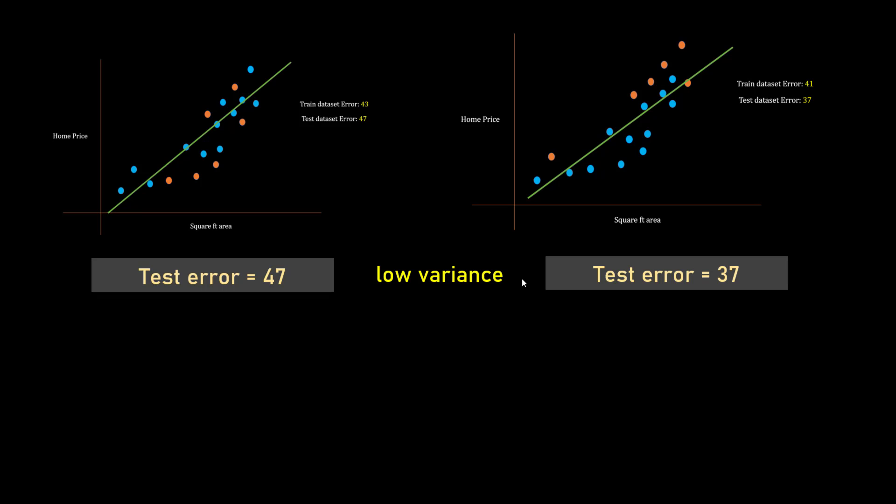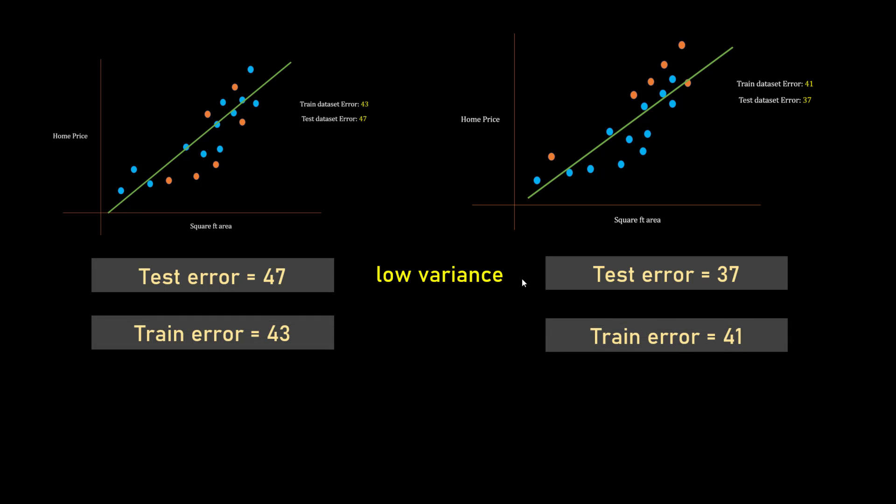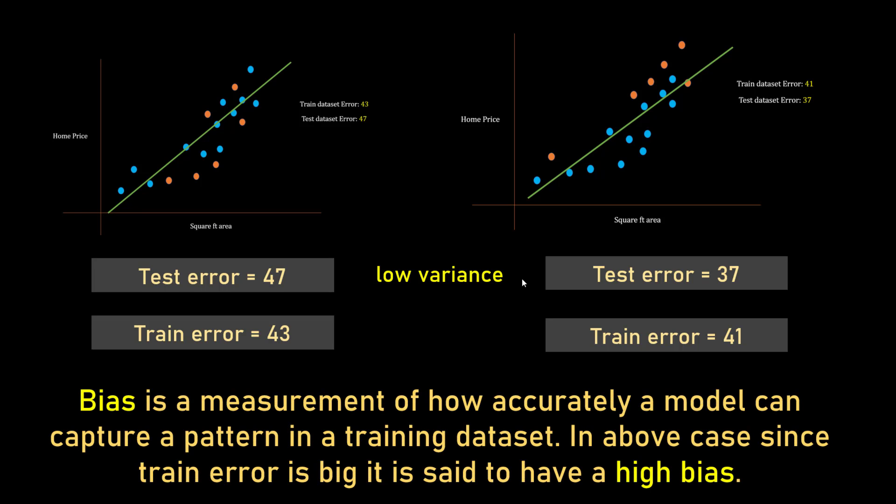This is called low variance because based on what data point you select as your training samples, your test error doesn't vary that much. 47, 37 - they're still similar, it's not like 100 and 27. Your test error doesn't vary too much, hence low variance. But if you look at your train error, in the previous case your train error was zero. Here you have some big train error, and that is called high bias.